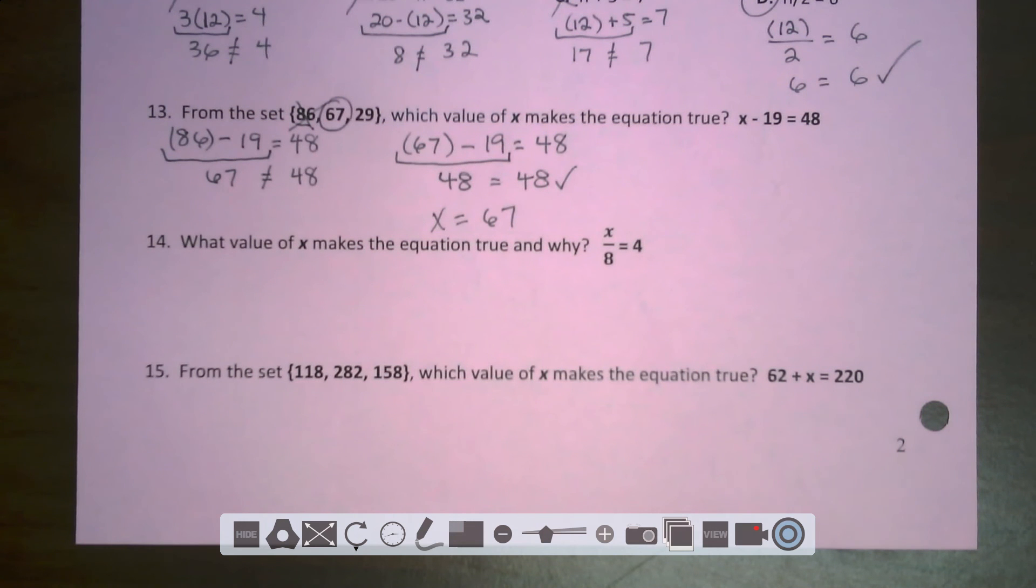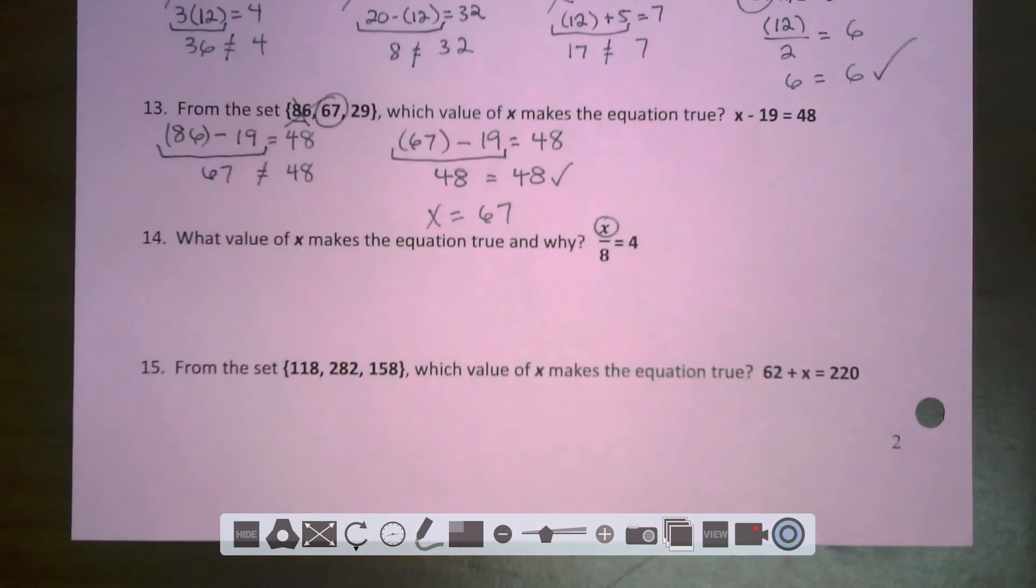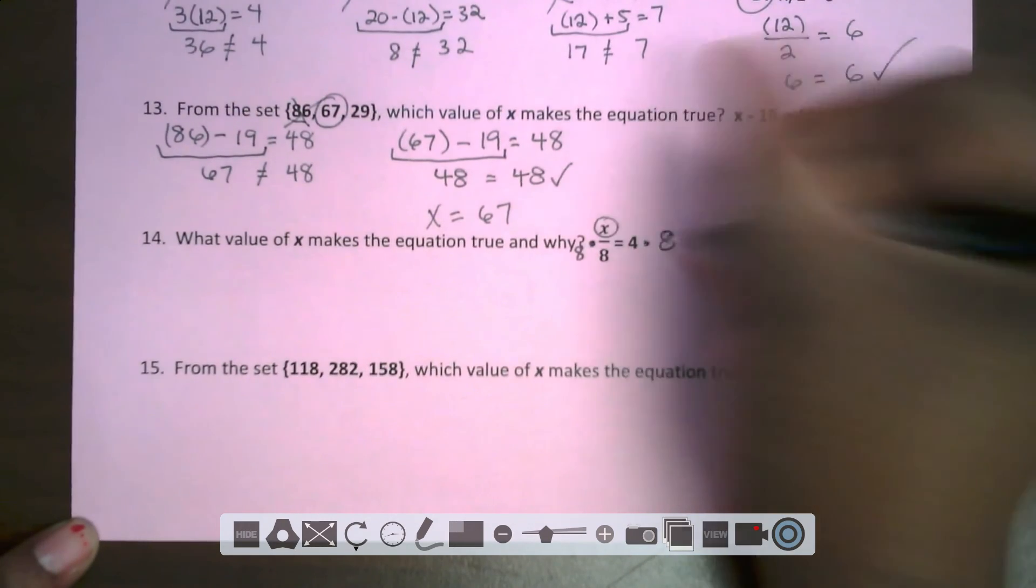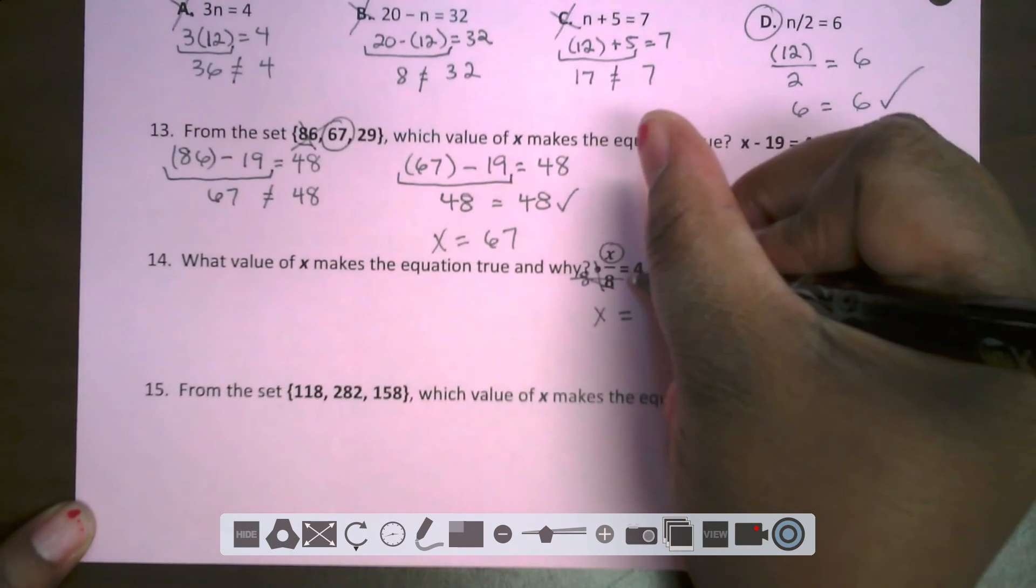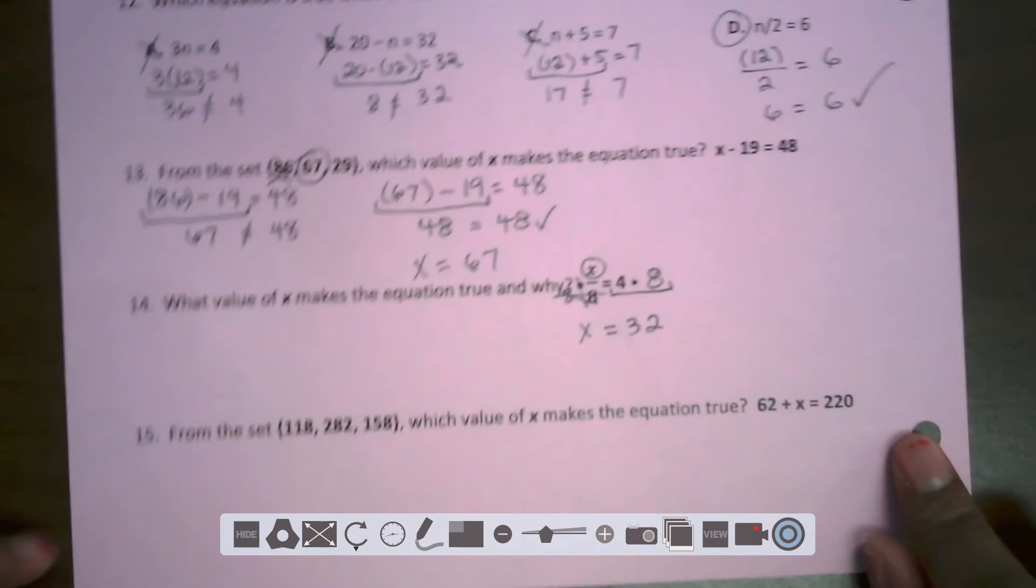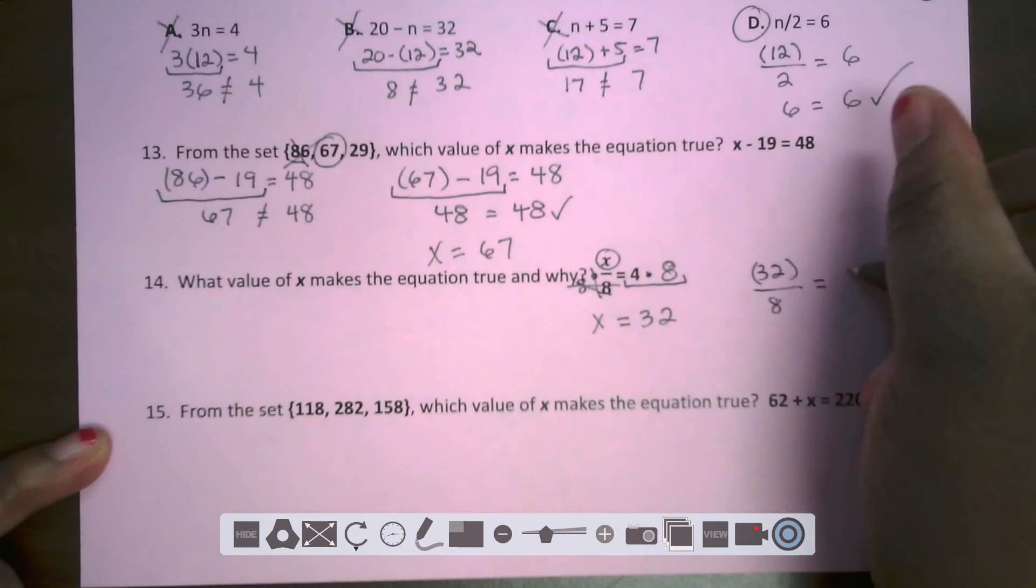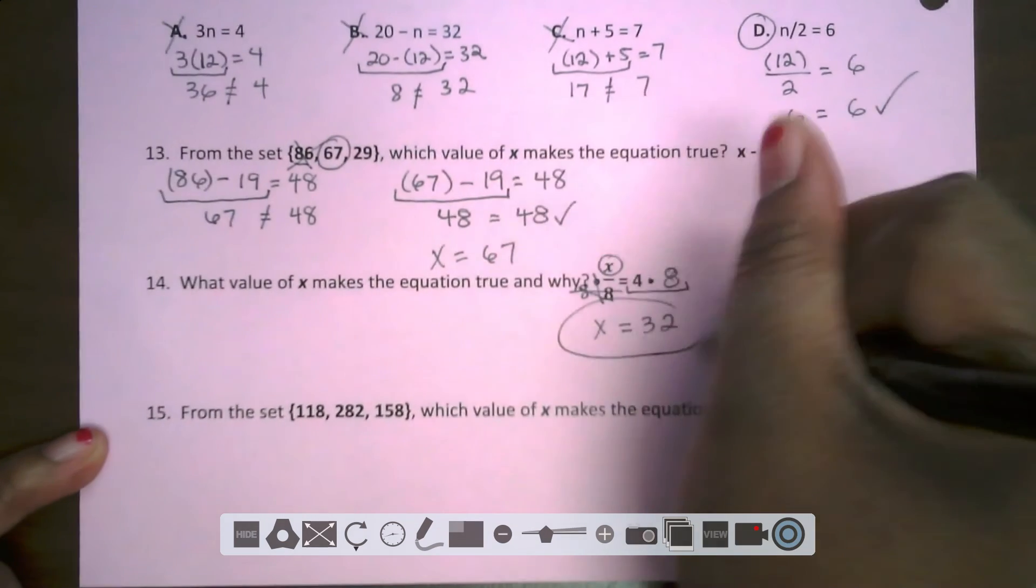Number 14. What value of X makes the equation true? We have another one step equation. I'm going to circle my variable of X. What is being done to X is being divided by 8. So that means I need to multiply both sides by 8. And these 8's down here cancel out, leaving me just with X equals. 4 times 8 is 32. So I have that X equals 32. But now I'm going to check it. I'm going to plug in my X of 32 over 8. 32 divided by 8 is 4. 4 does indeed equal 4. So my X equals 32 is correct.